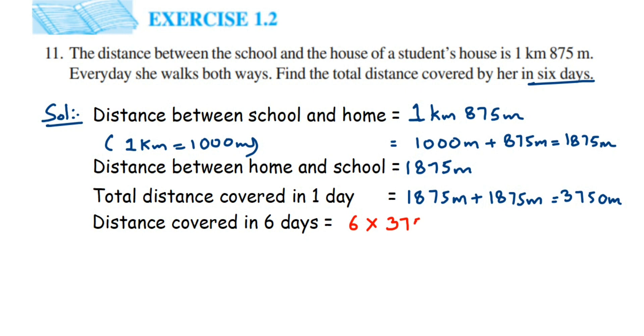This equals 6 multiplied by 3750 meters. Let's multiply: 3750 times 6. 6 times 0 is 0, 6 times 5 is 30, 6 times 7 is 42 plus 3 is 45, then 6 times 3 is 18 plus 4 is 22.